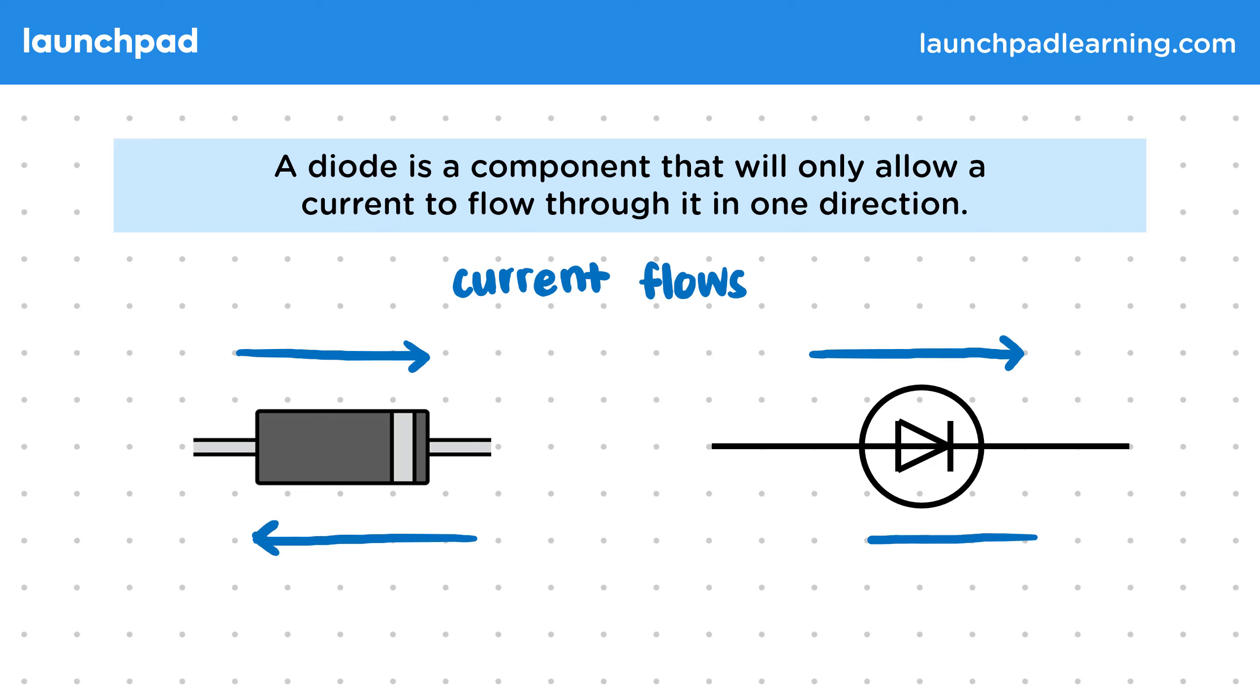But if we reverse the current, then it will be stopped by the diode. The current can no longer flow if it's trying to go against the direction of the diode.